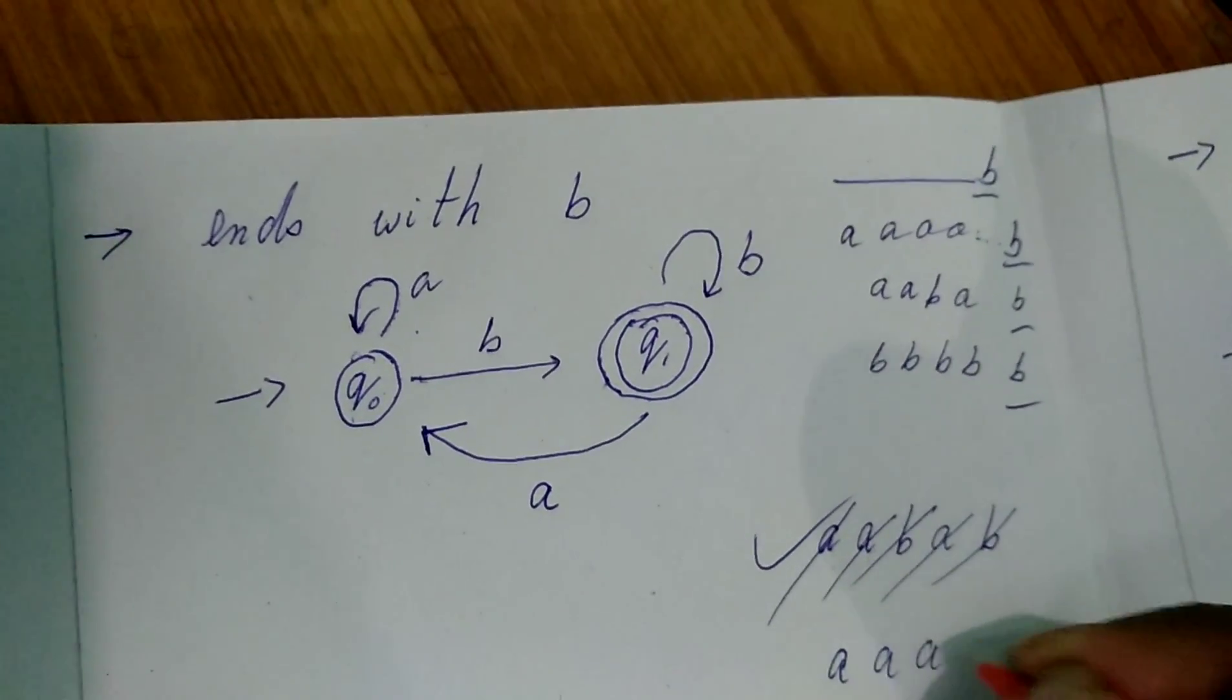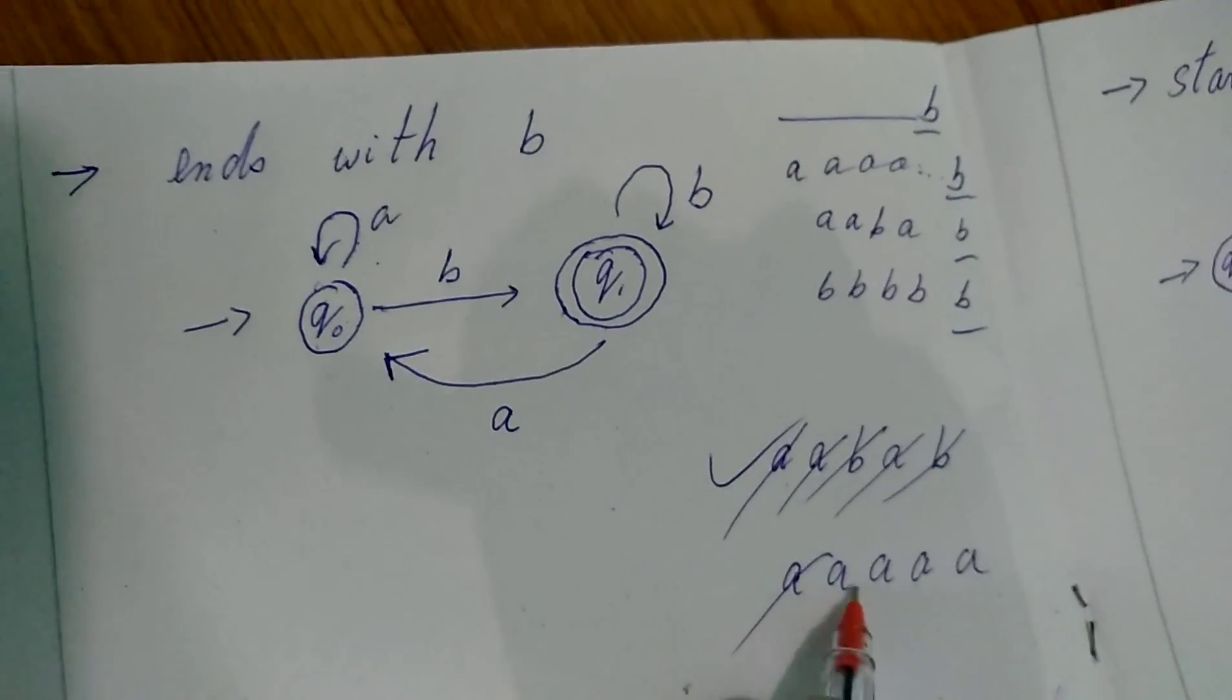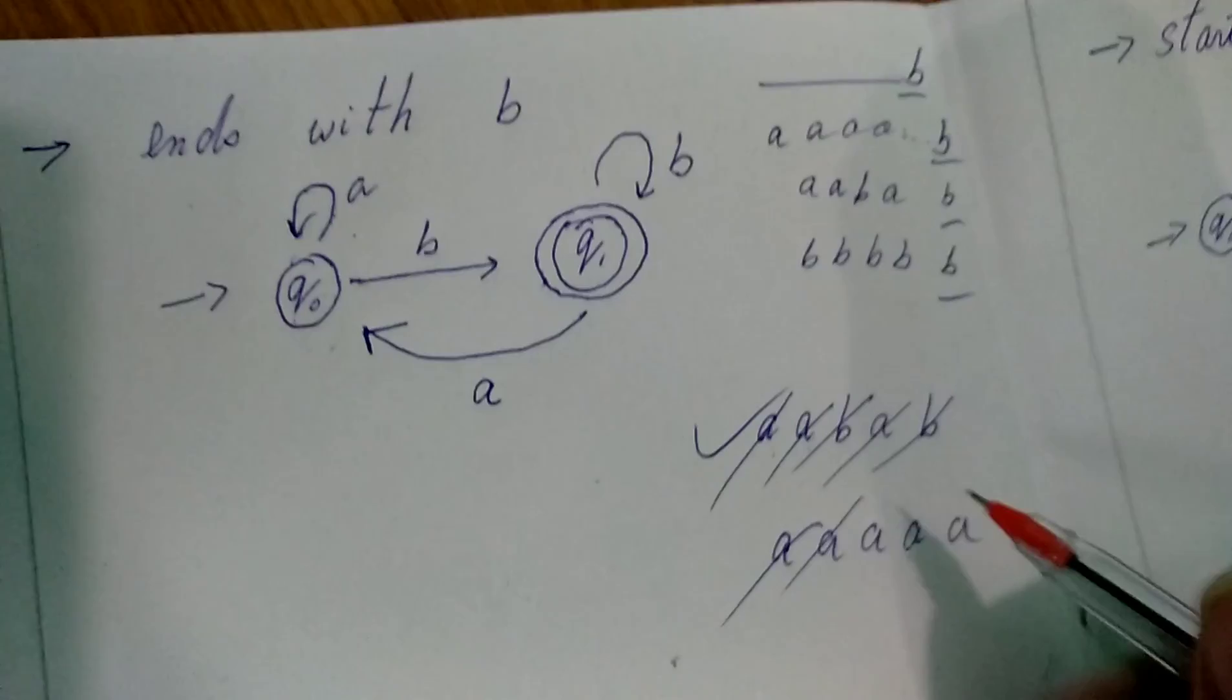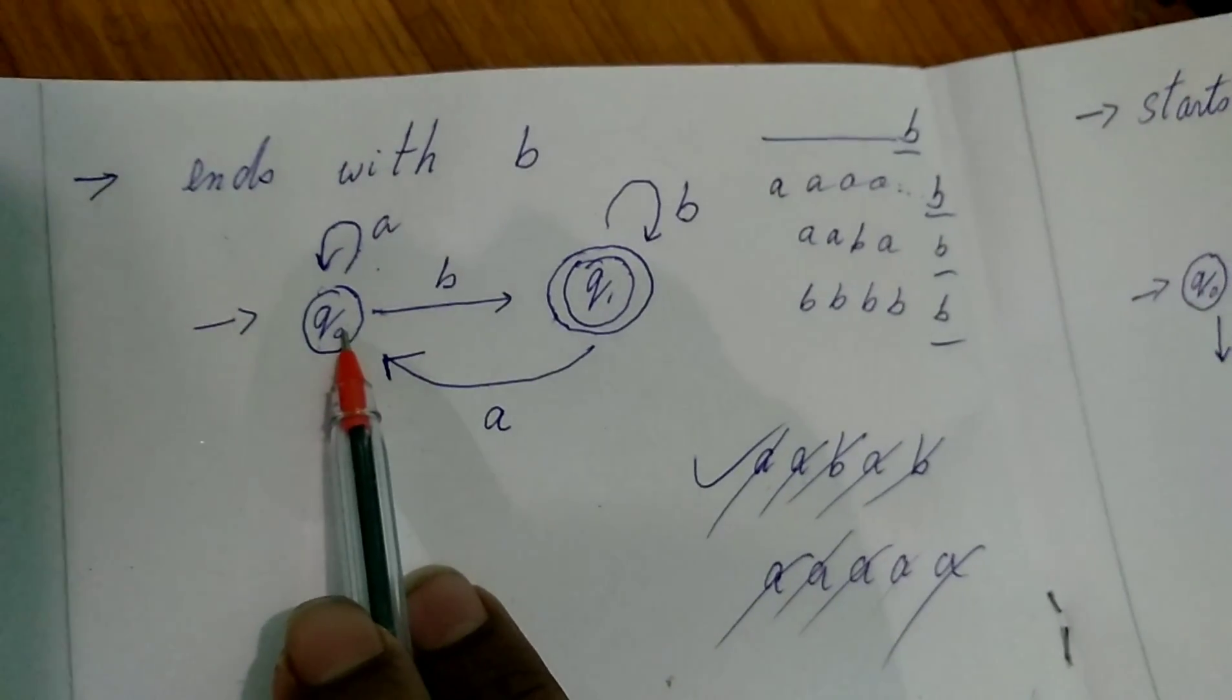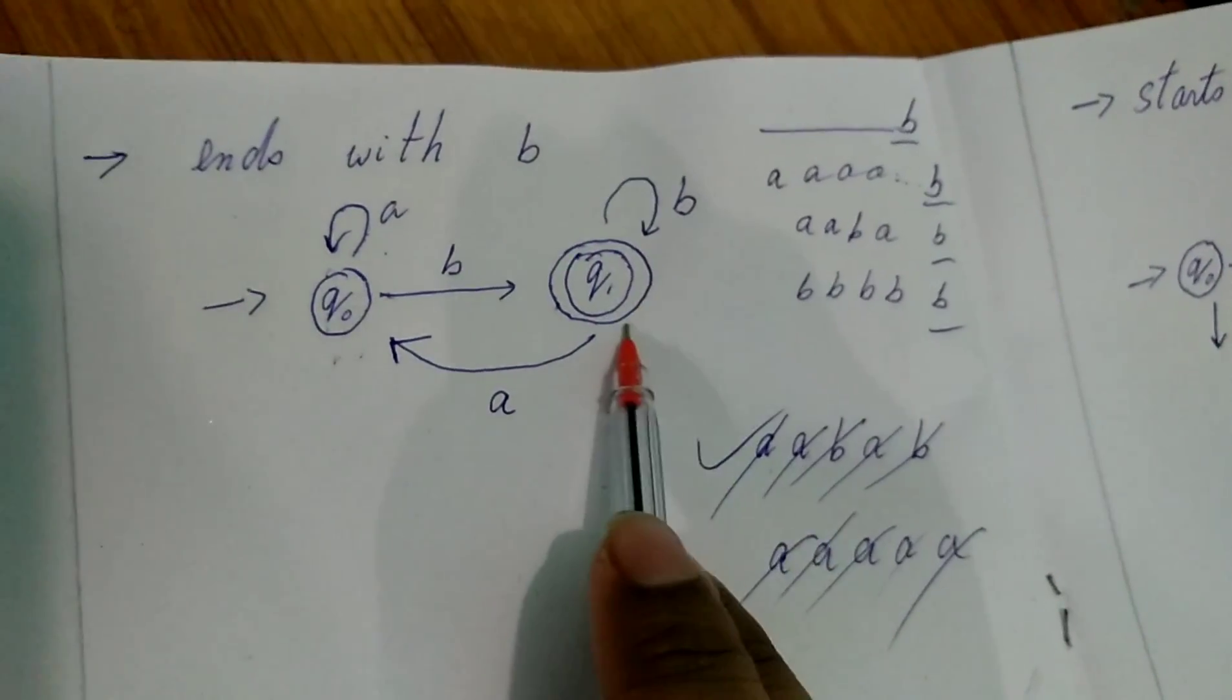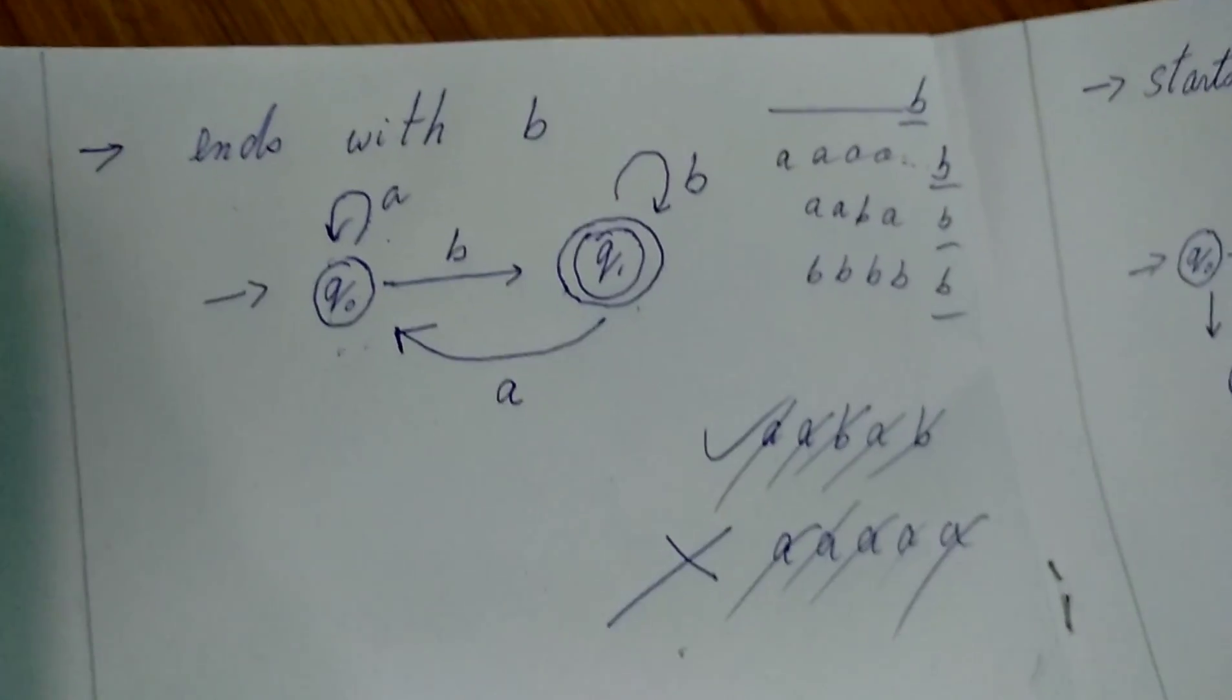Suppose if we take A, A, A, A, A. Q0, again A because of self-loop, it will be again A, again A. It is remaining in the same state, Q0. Unfortunately, it is not going to the Q1 that is the final state. That's why it has been rejected. The string has been rejected.